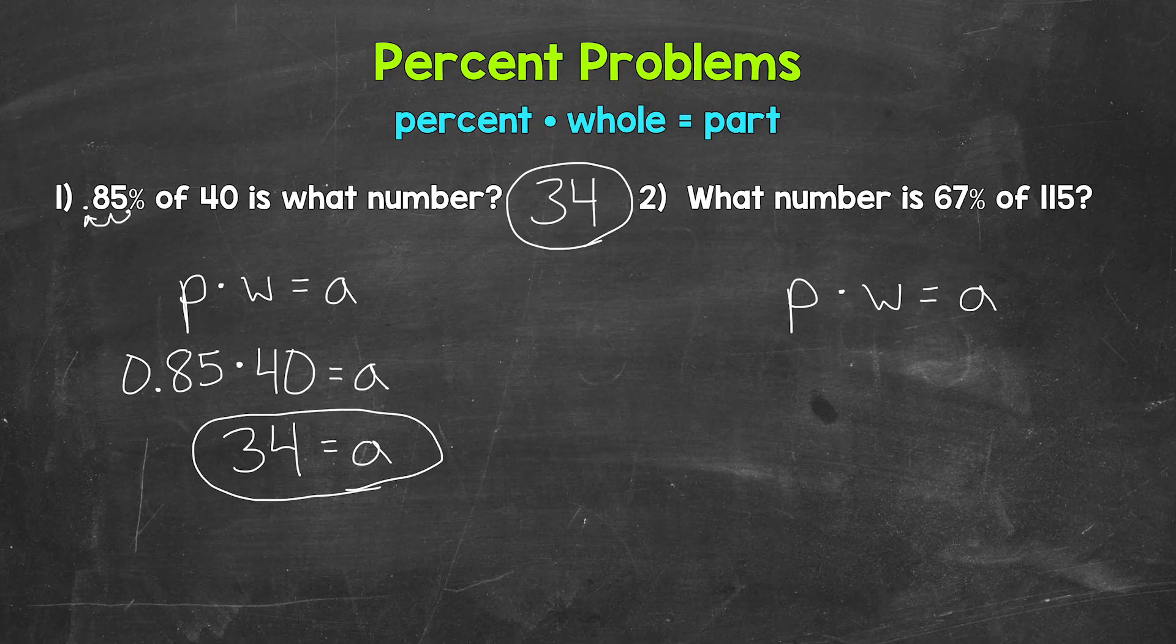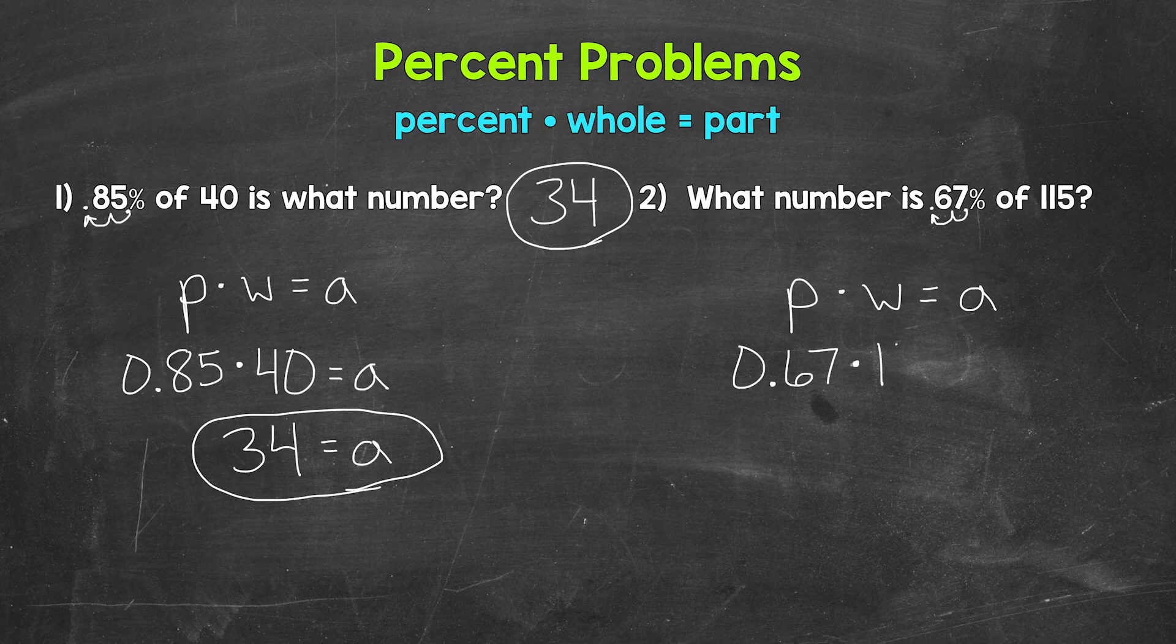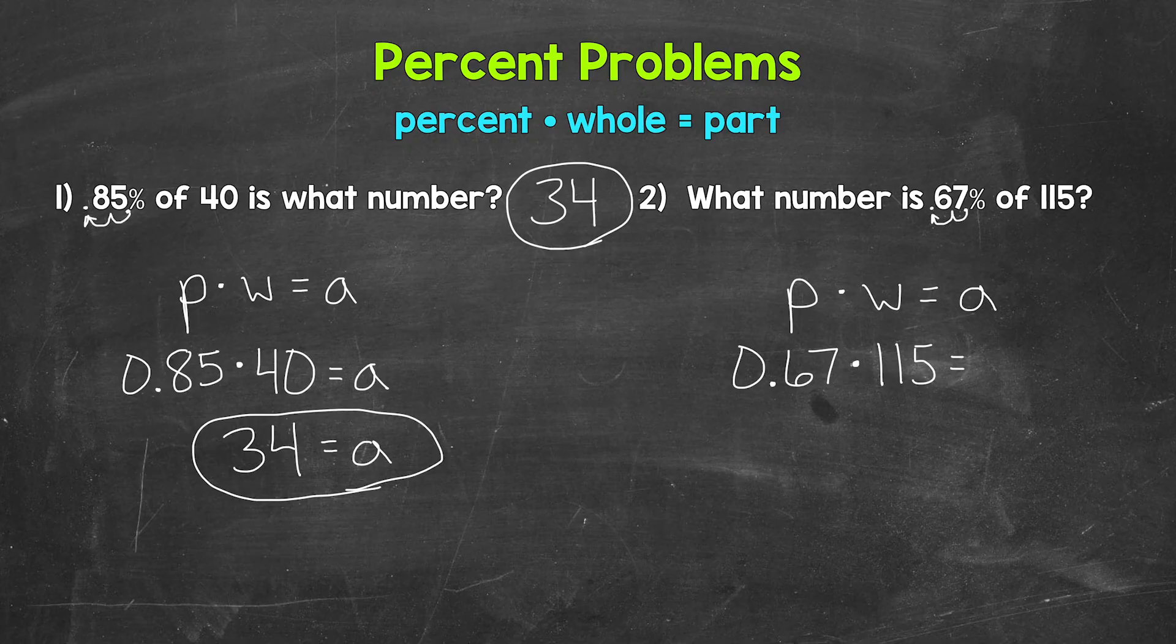Now we need the decimal of 67%. So the decimal goes right there after 67, after the whole number. And we move it once, twice to the left, and we get 0.67, 67 hundredths. So let's plug that in. So 67 hundredths times the whole, which is 115 equals the part, which is unknown. We have what number is 67% of 115. So we keep our variable of a.